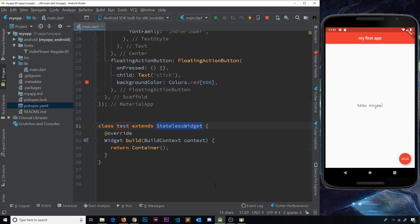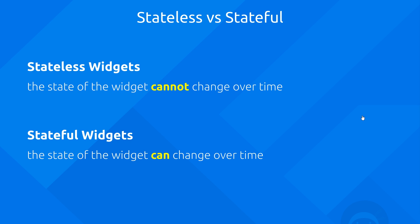I keep using the word 'stateless' — but what does that mean exactly? In Flutter we can have either stateless or stateful widgets. A stateless widget means the state of the widget cannot change over time — the layout, colors, or any data used inside that widget has to be final. It can contain data, but that data can't change after the widget has been initialized.